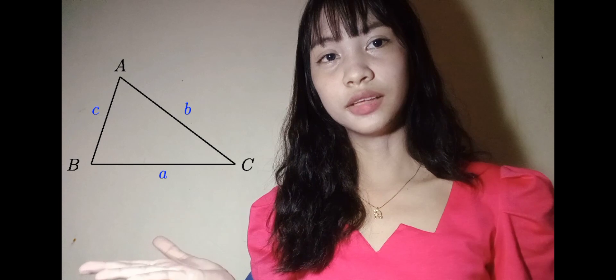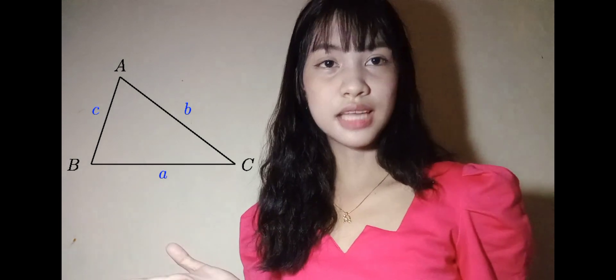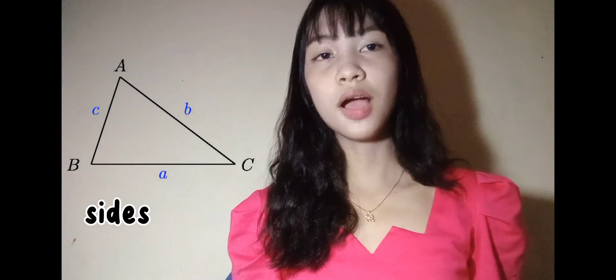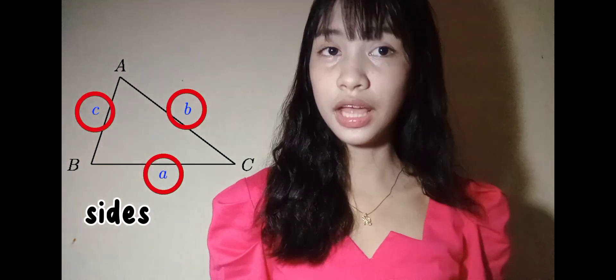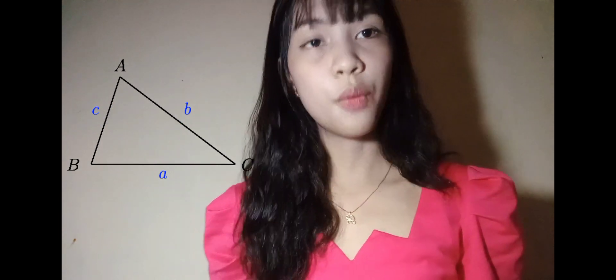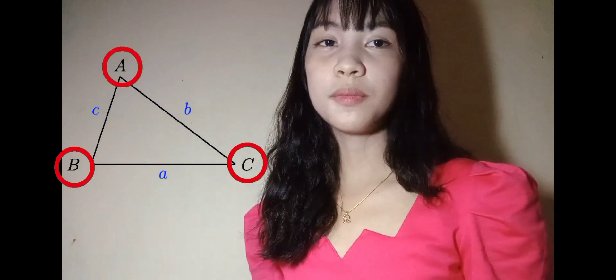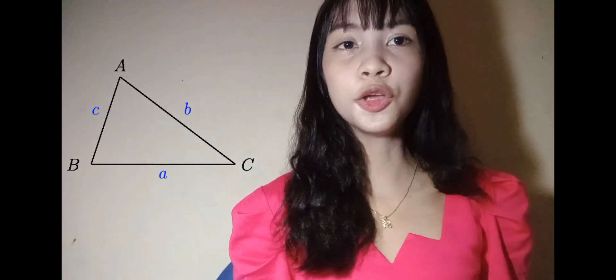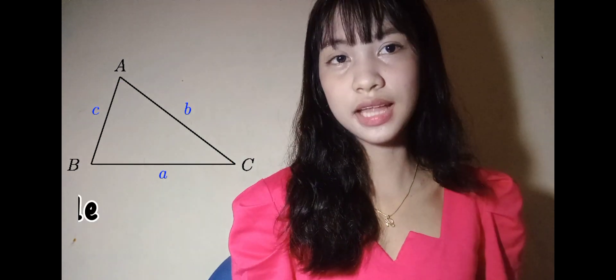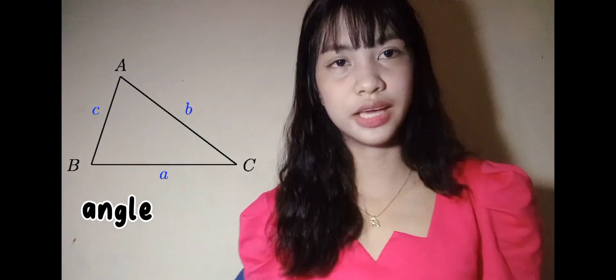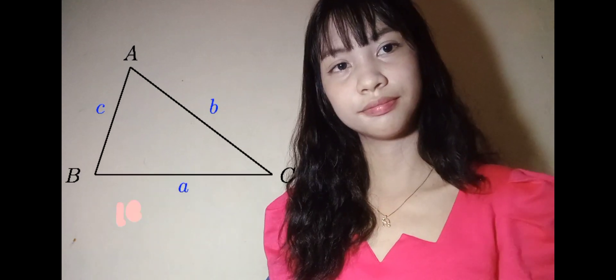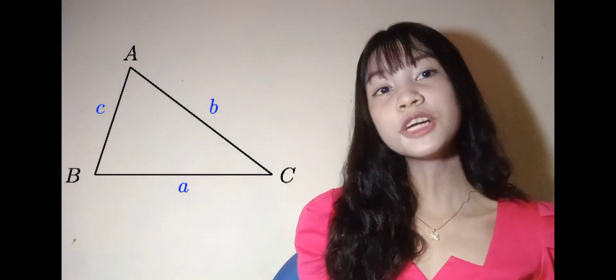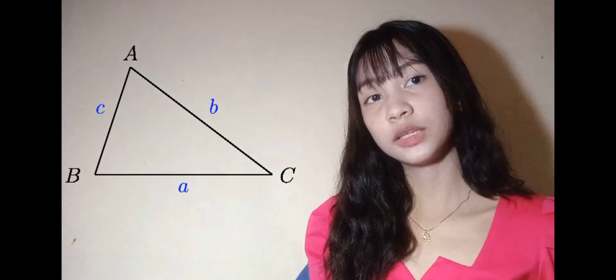Looking at the oblique triangle, our sides are represented by small letters. While the capital letters represent our angles. So, remember our three parts.